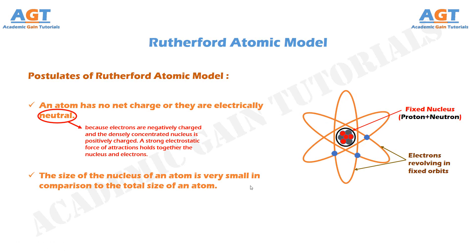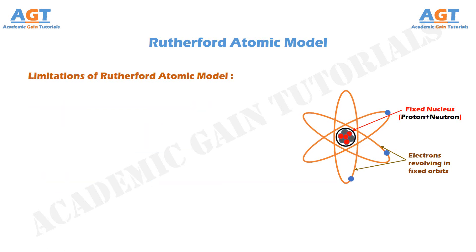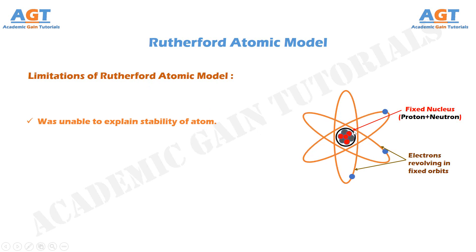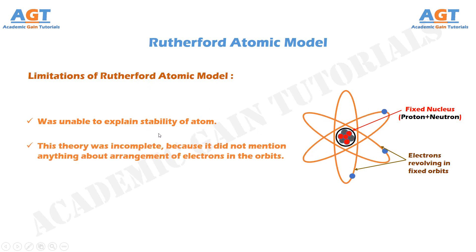Now, let's look at the limitations of Rutherford's atomic model. This model was unable to explain the stability of the atom. This theory was also incomplete because it did not mention anything about the arrangement of electrons in the orbits.